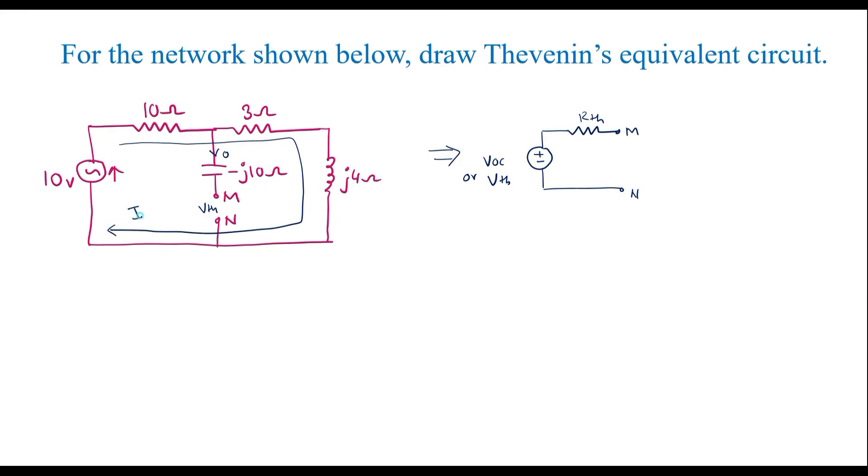Current through this loop, I will call it as I. Now therefore, by applying KVL, I can write 10 is equal to 10, this 3 and J4 are in series. That is, 10 plus 3 plus J4 all are in series into I. That is nothing but 10 is equal to 13 plus J4 times I.